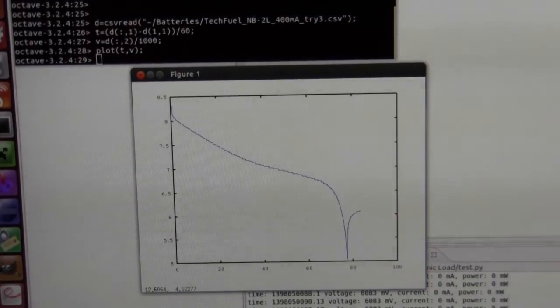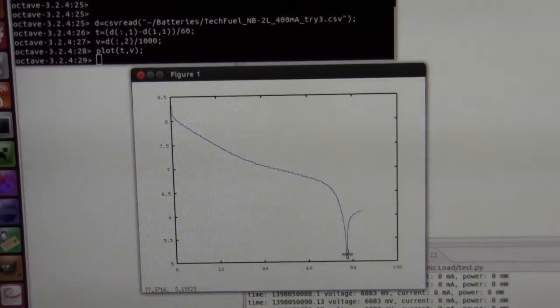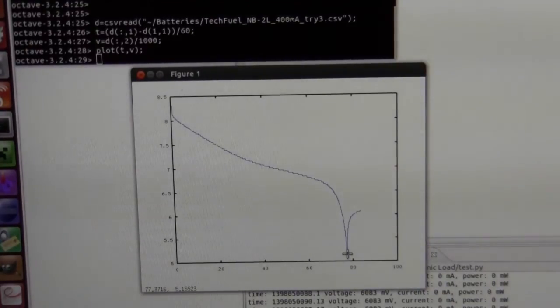So here we are. I ran this experiment again, fully charged, fully discharged at 400 milliamps, and what do I see? Well, have a look: exactly the same, 77 minutes. So as we calculated before, that's about 513 milliamp hours. Well, I am disappointed again.